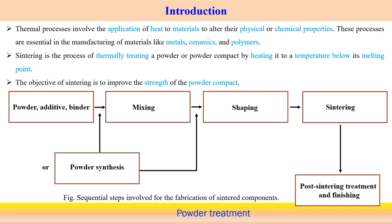It is necessary to understand how the interaction of any kind of heat source with powder materials happens, which explains the different manufacturing processes associated with metallic powder, ceramic powder, or polymer powders. Sintering is a thermally treating process — compacting the powder by heating at a temperature usually below the melting point. The objective of sintering is to improve the strength of the powder compact.